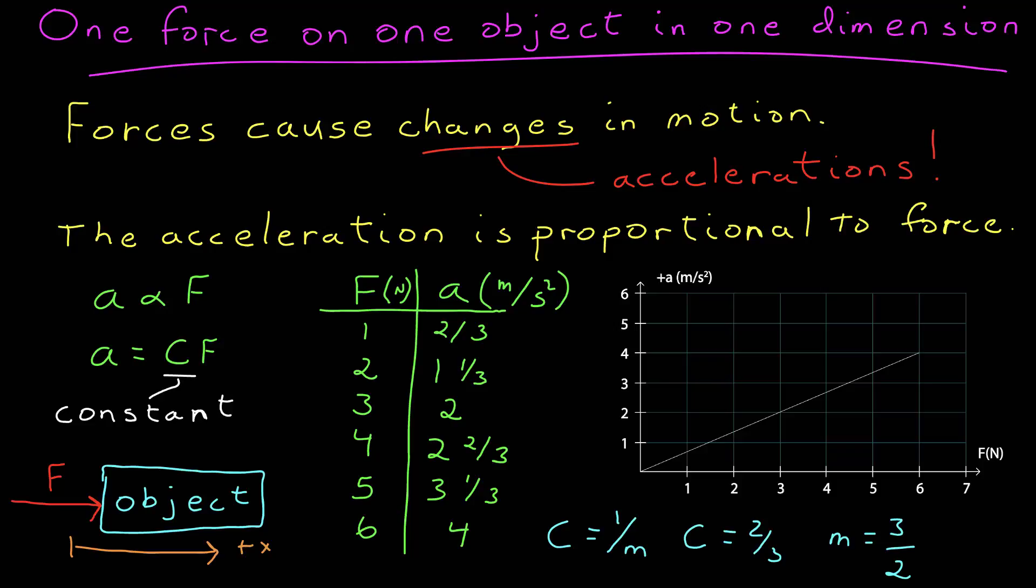And it may seem cumbersome to think about it this way, but it's useful, especially the first time you see it. That acceleration is the result of the force. So, you apply a series of forces, you measure a series of accelerations. The constant of proportionality is one over the mass of the object.